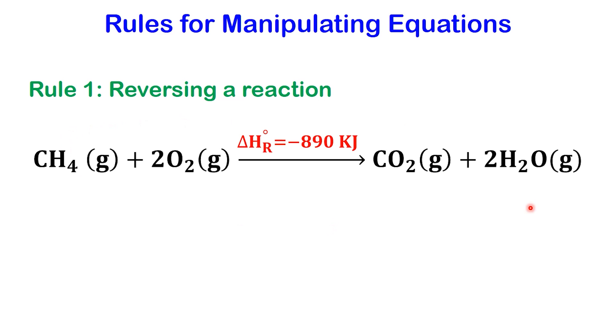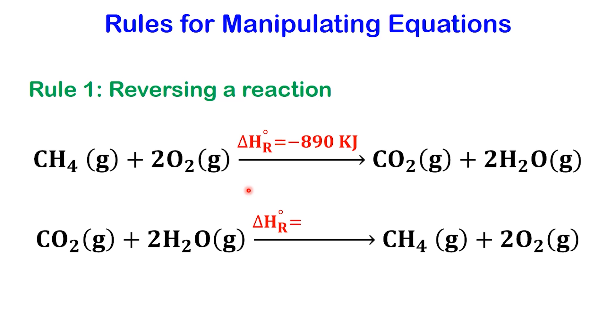If we reverse this equation so that methane and oxygen are produced, the enthalpy change becomes plus 890 kJ.